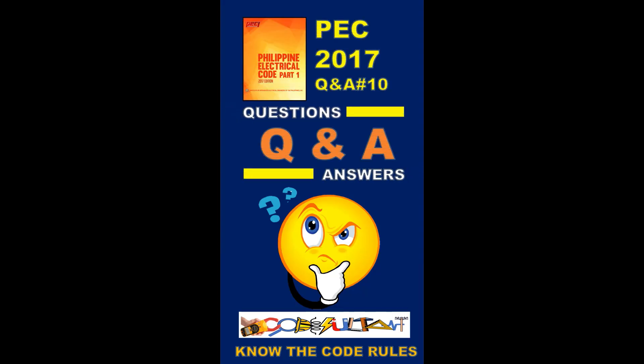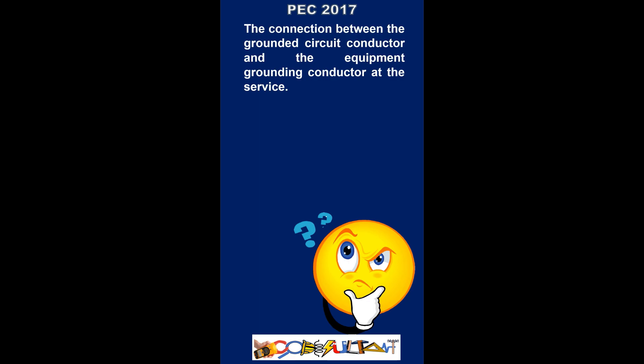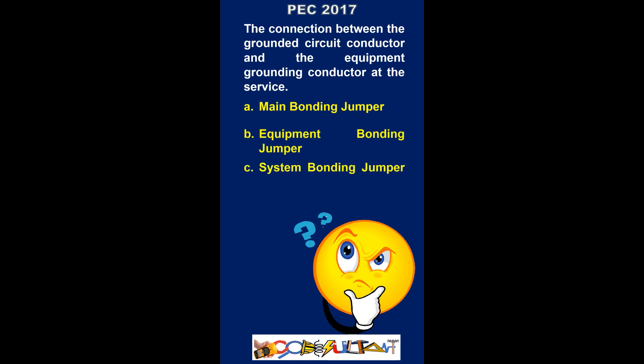PEC question and answer number 10. The connection between the grounded circuit conductor and the equipment grounding conductor at the service. A. Main bonding jumper. B. Equipment bonding jumper. C. System bonding jumper. D. Grounding.